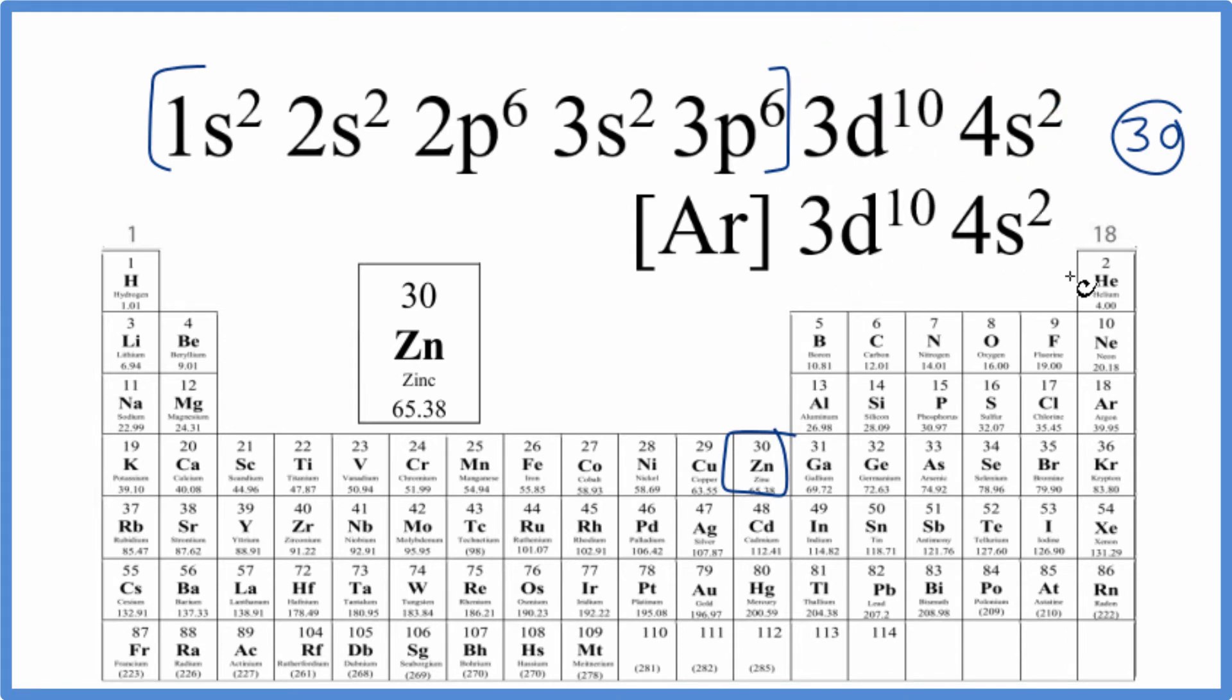So we can look at these electrons—these are the valence electrons for zinc here—and then find zinc on a periodic table broken up into orbital blocks. Let's do that.